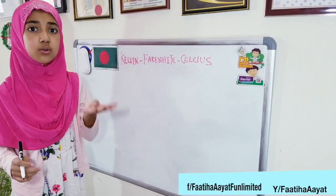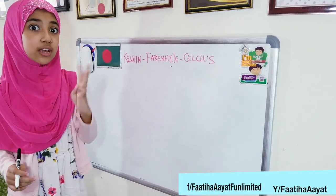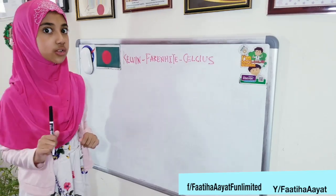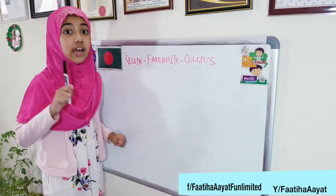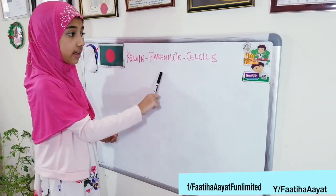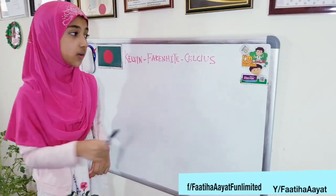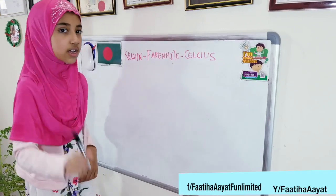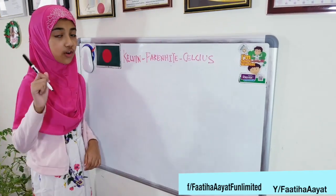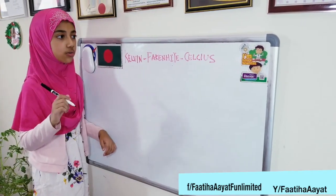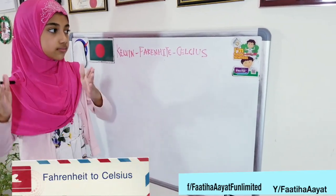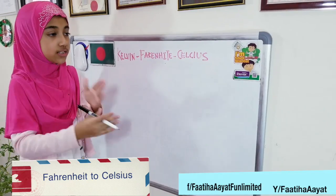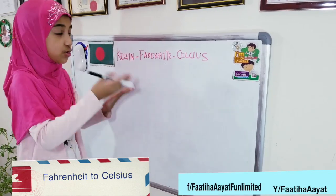As we all know, there are three units of measuring the temperature. One is the Kelvin, another one is the Fahrenheit, and the other one is the Celsius. First of all, I'm going to show you how you can convert the Celsius to the Fahrenheit.